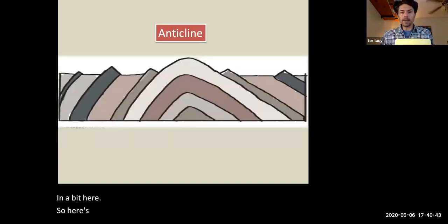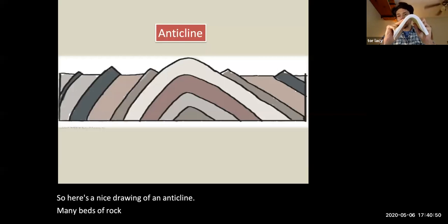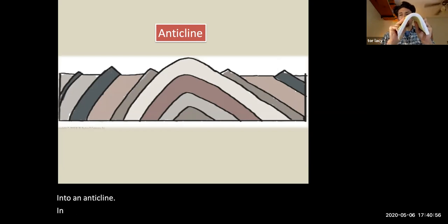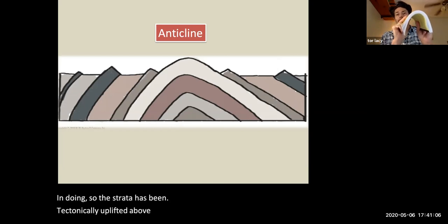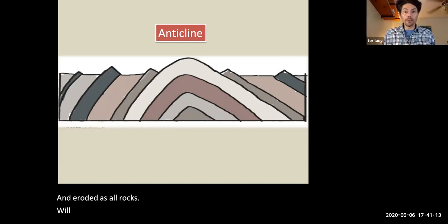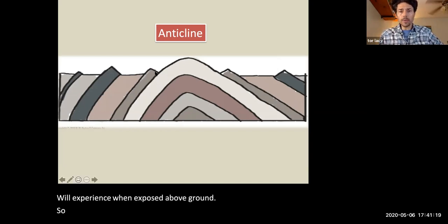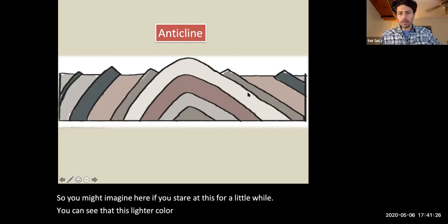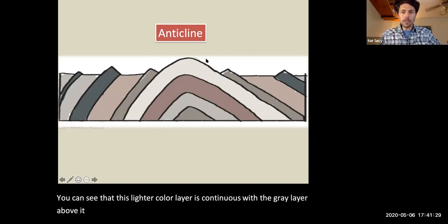So here's a nice drawing of an anticline. Many beds of rock have been bent into an anticline. In doing so, the strata has been tectonically uplifted above Earth's surface and eroded as all rocks will experience when exposed above ground. So you might imagine here, if you stare at this for a little while, you can see that this lighter colored layer is continuous, but the gray layer above it is not, but used to be continuous.